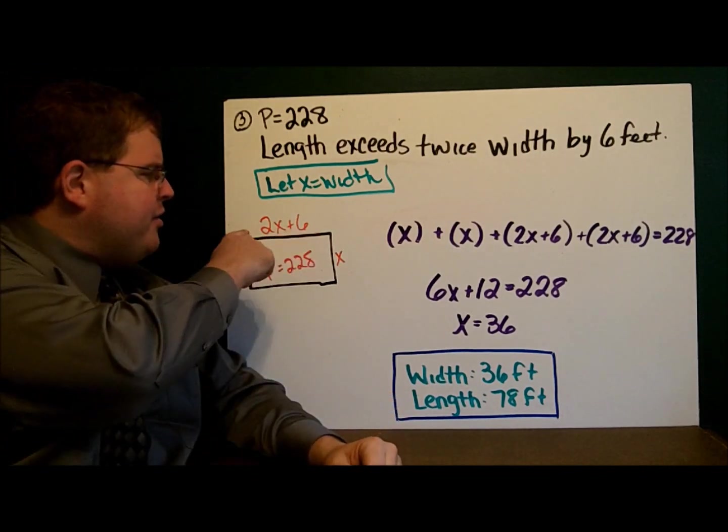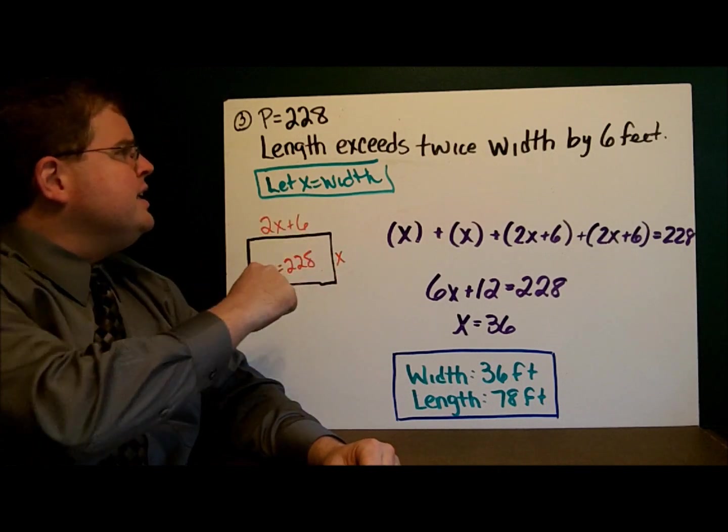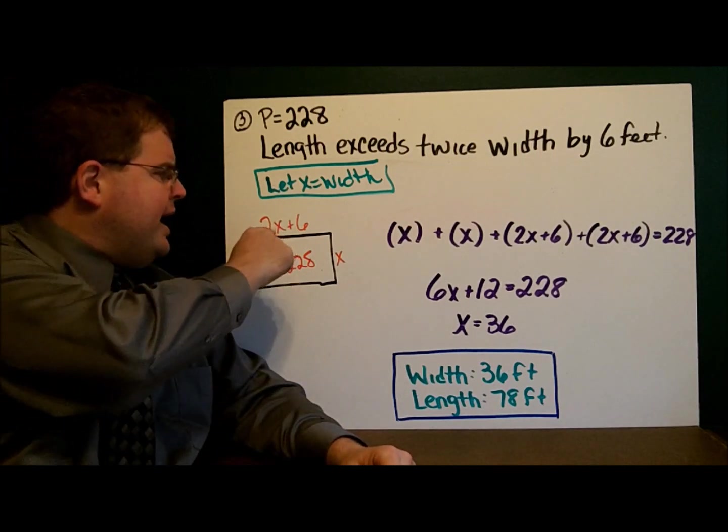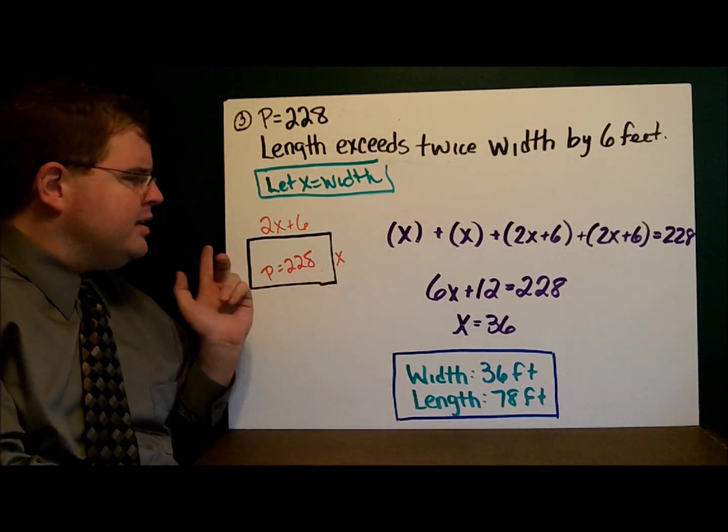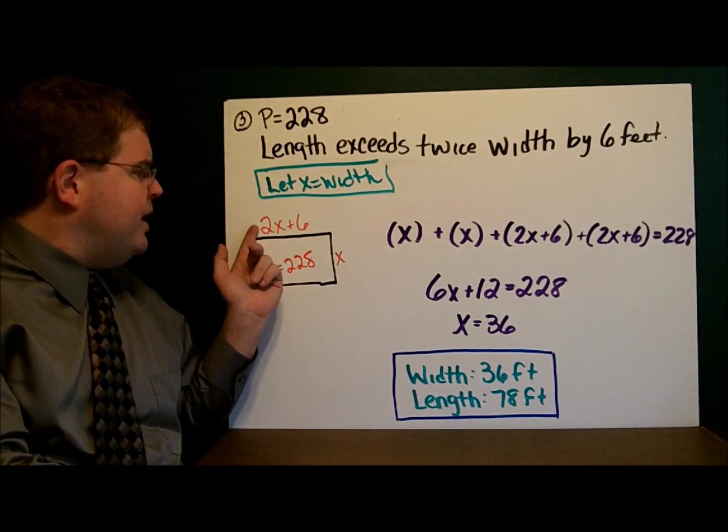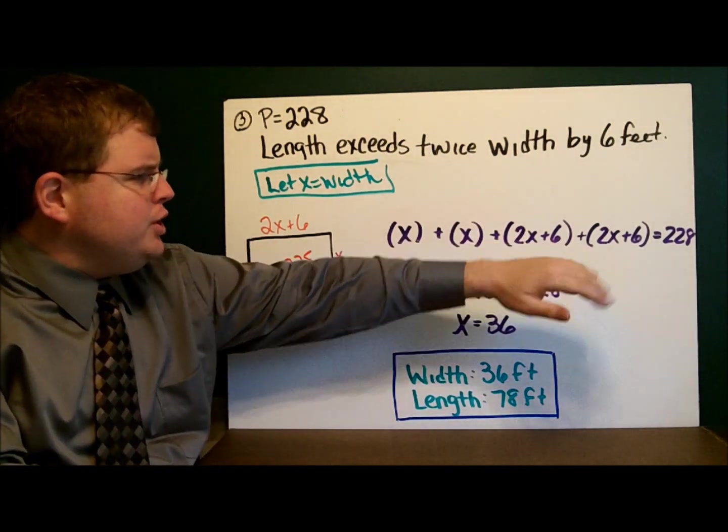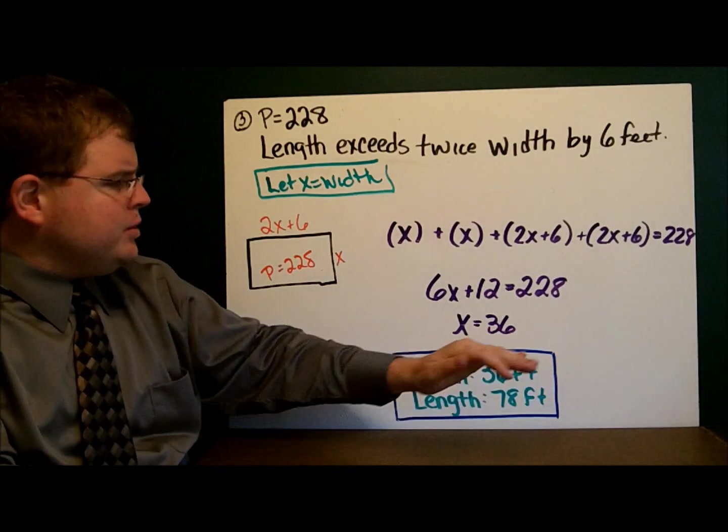Next, I have my diagram. I have this side as x, and the other sides twice the width plus 6. So 2x plus 6. Now let's write our equation. We have x plus x plus 2x plus 6 plus 2x plus 6 equals 228. Solve the equation. x equals 36.